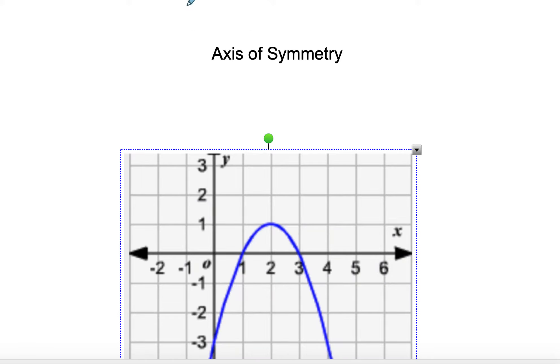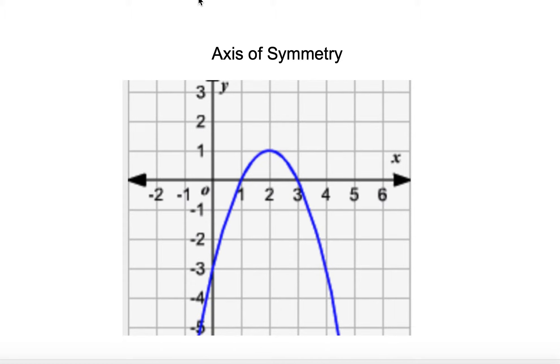Even if it opens down, it works the exact same way. And so this one, smack dab between 1 and 3 is 2. So the axis of symmetry on this one is x equals 2. If we didn't have a graph, we would do 1 plus 3 divided by 2. And so that gives you 4 divided by 2, so x is equal to 2. That's your axis of symmetry.